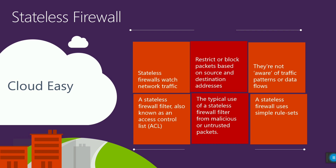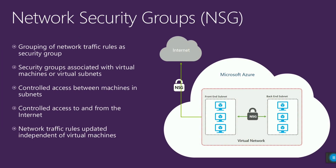So in Azure, the stateless firewall is nothing but NSGs. It works at Layer 4 functionality. Security groups are associated with virtual machines and virtual subnets. NSG rules can be applied at the subnet level or at the NIC level — NIC meaning network interface card for each VM. But in general practice, NSGs are recommended to be applied at the subnet level.